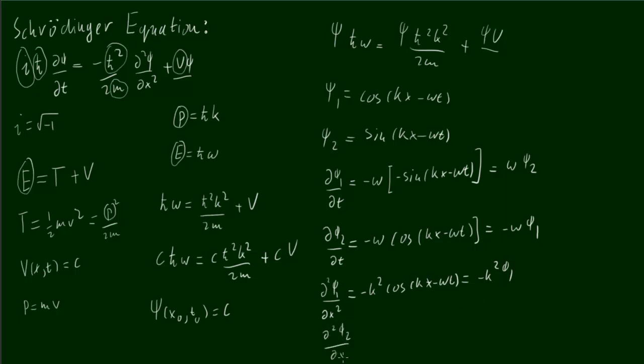And for psi 2, we differentiate twice with respect to space again. And we get minus k squared sin(kx minus omega t), which just equals minus k squared psi 2.